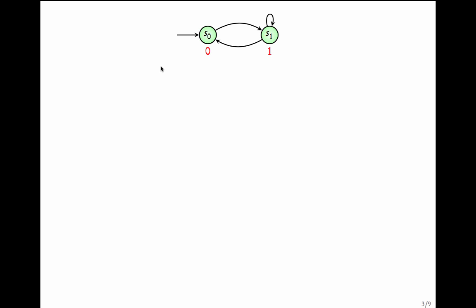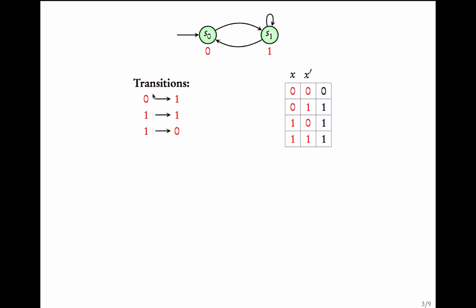Now what about the transitions? Assume there are two variables x and x prime. x is the source variable and x prime is the target variable. When the source is 0 and the target is 0 there is no transition, so 0 0 goes to 0. On the other hand 0 1 goes to 1, 1 0 goes to 1, and 1 1 goes to 1. This truth table is an encoding of this transition system.